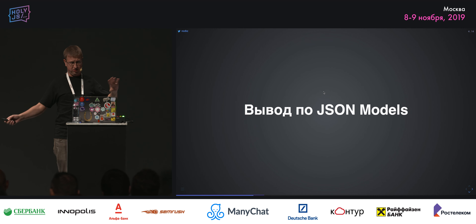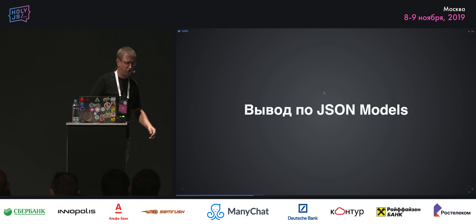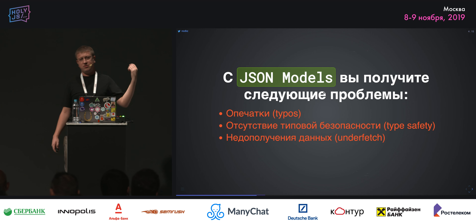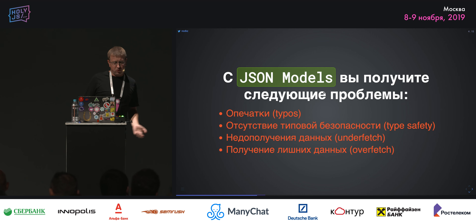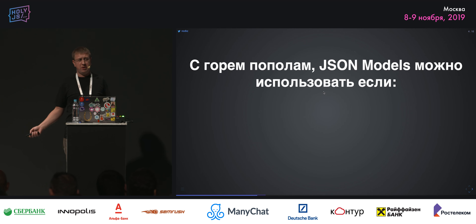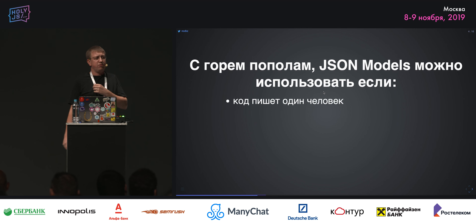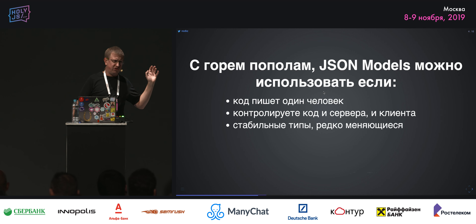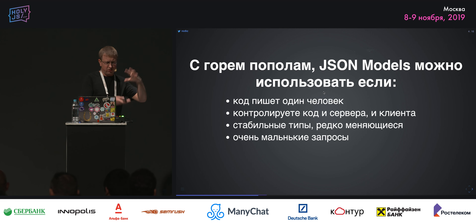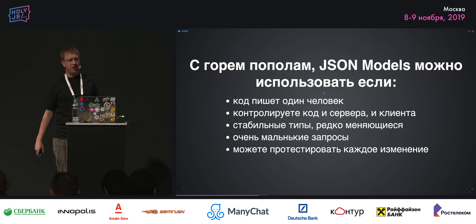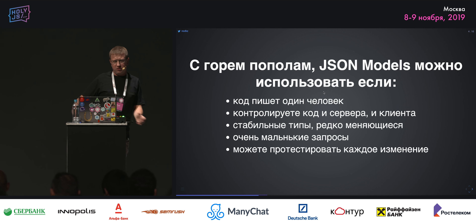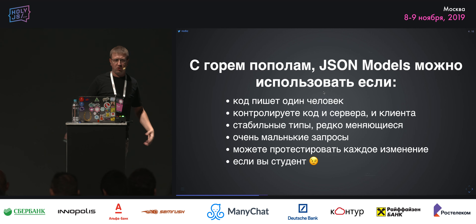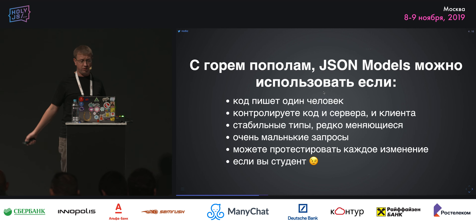Выводы по JSON-models: у вас могут быть опечатки, отсутствует типовая безопасность, вы недополучаете данные и можете получить лишние данные. С горем пополам JSON-models можно использовать, если вы пишете код один, контролируете код сервера и клиента, у вас редко меняются типы, очень небольшие запросы, всё покрыто тестами. И самое главное — если вы студент. Этот подход очень простой, но имеет право на существование.